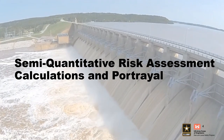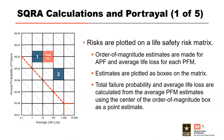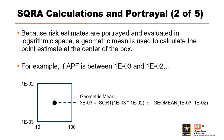Let's dive into Semi-Quantitative Risk Assessment calculations and portrayal. This course has previously discussed calculations and plots for quantitative risk assessments. For SQRAs, the risks are plotted on a life safety risk matrix very similar to the little f-N plot. Order of magnitude estimates are made for the annual probability of failure and average life loss for each PFM, and are plotted as boxes on the matrix. Because risk estimates are portrayed in log-arithmetic space, a geometric mean is used to calculate the point estimate at the center of the box.